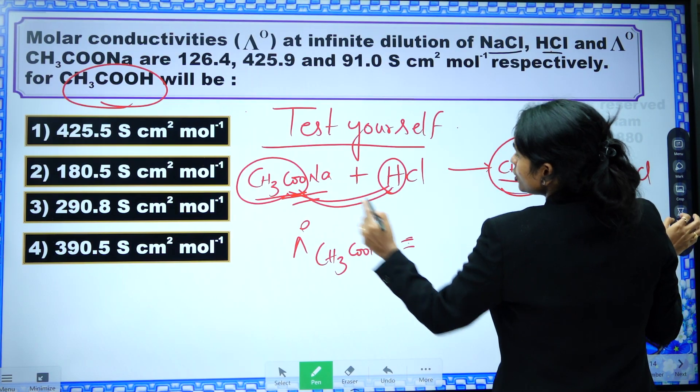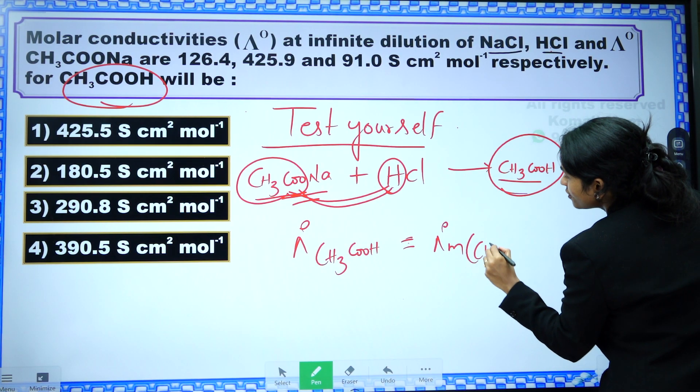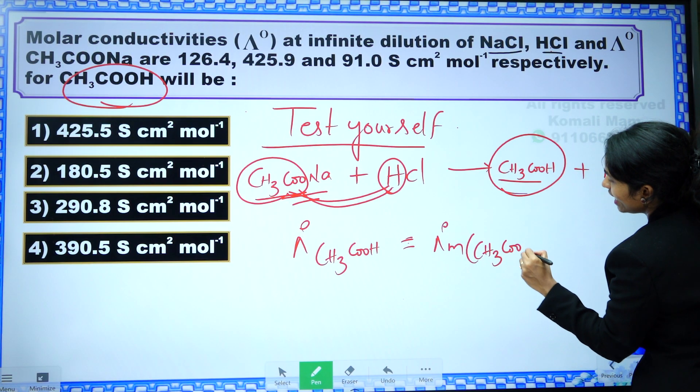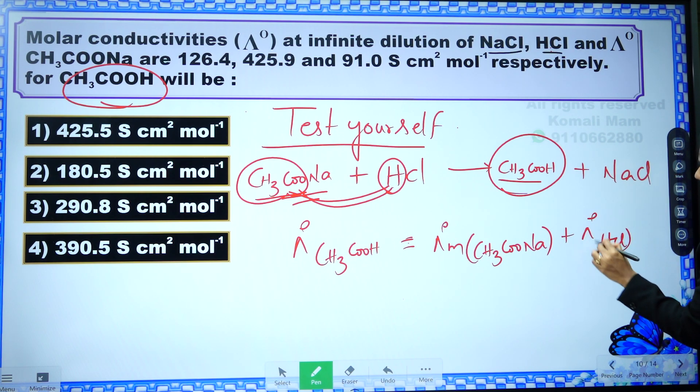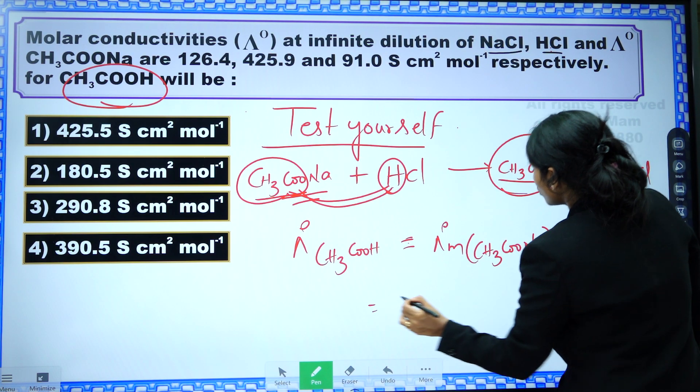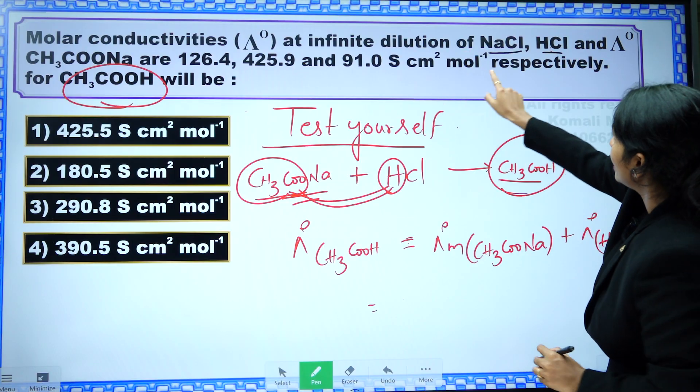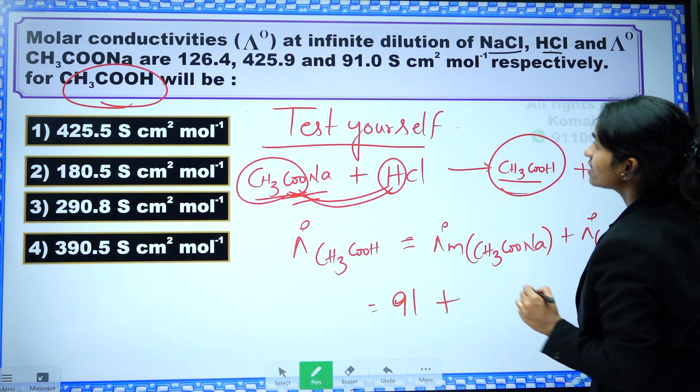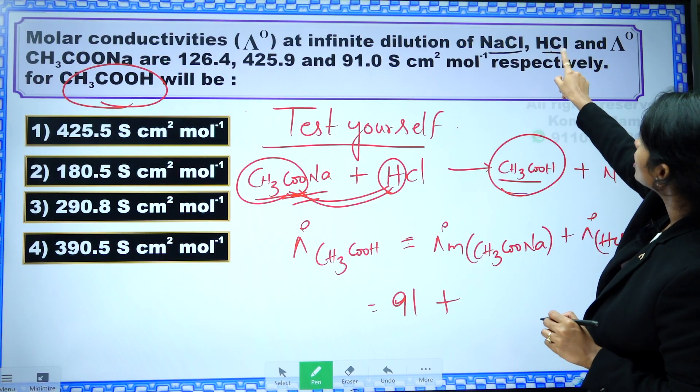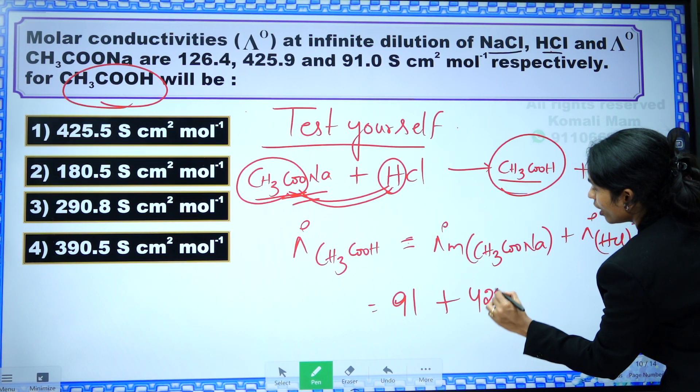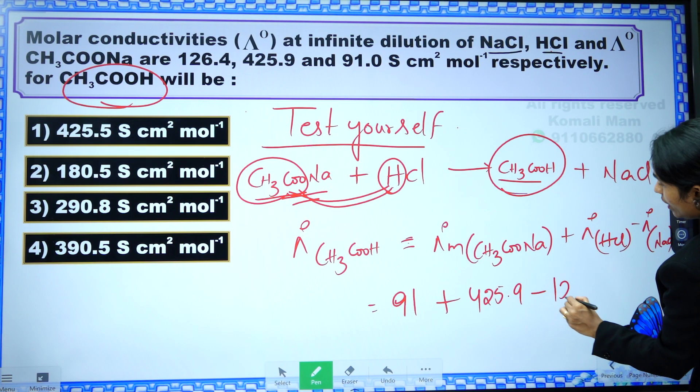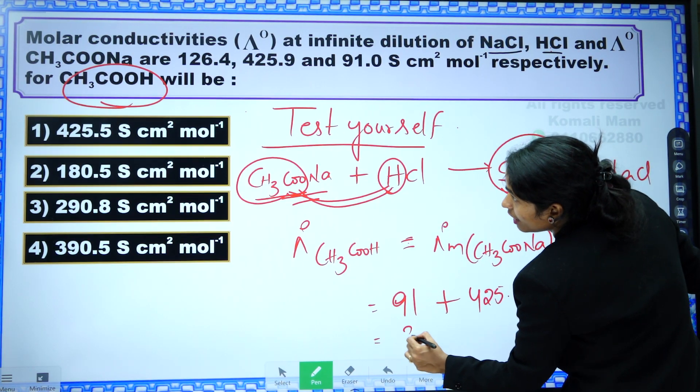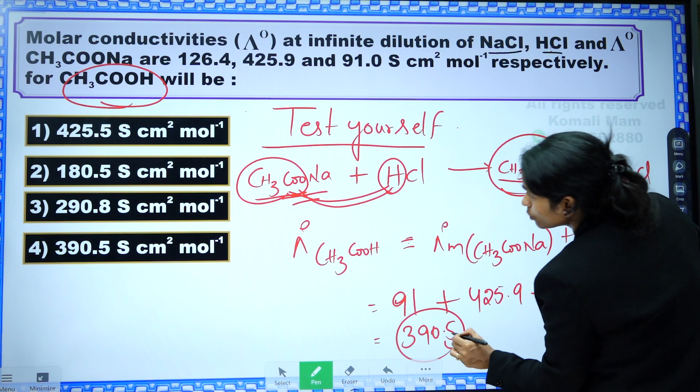The sum of these two limiting molar conductivity of CH3COONa plus limiting molar conductivity of HCl minus limiting molar conductivity of NaCl. Okay, what is the sodium acetate value which is given in the question? Third data: 91. Plus what is the second data? HCl, that is 425.9. Minus NaCl is the first data, that is 126.4, which upon solving will be getting 390.5.